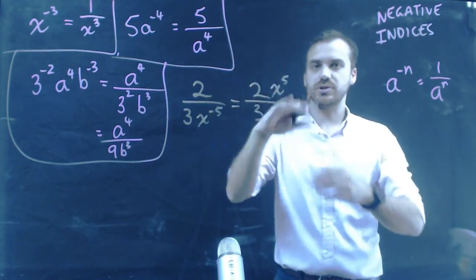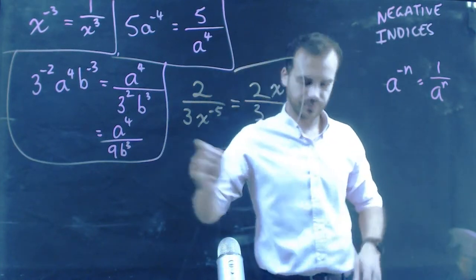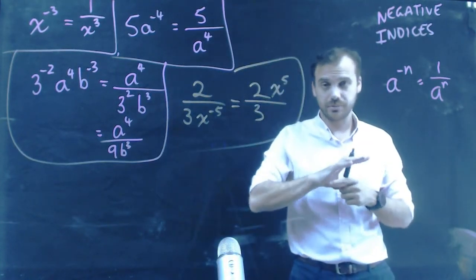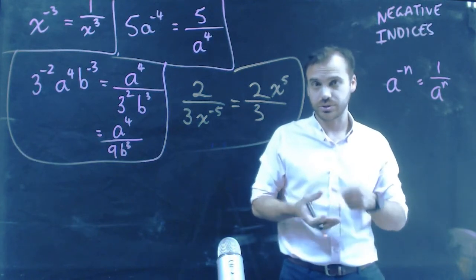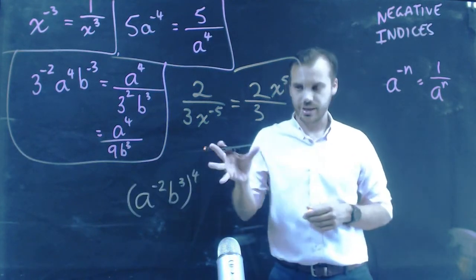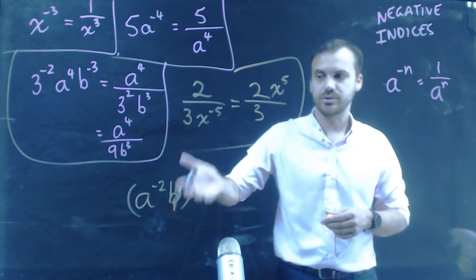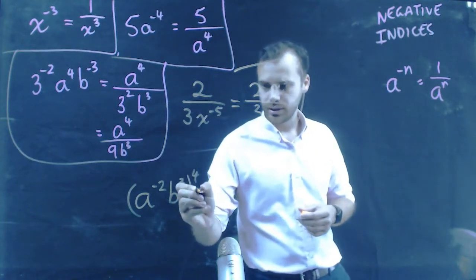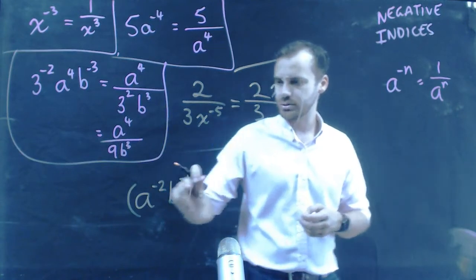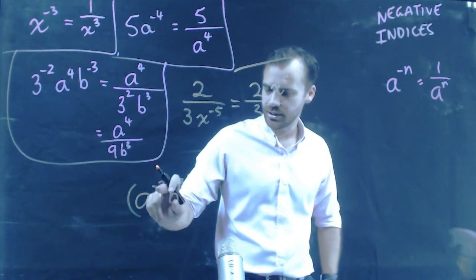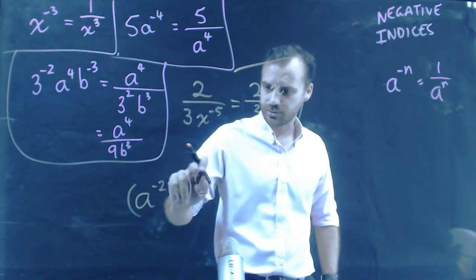The x moves to the top. Of course, all of this can be combined with other laws that you already know. a to the negative 2, b to the 3, in brackets, all to the power of 4. Now, you'll know one of your index laws tells you that if this is happening, you can take this number and multiply it by this number.